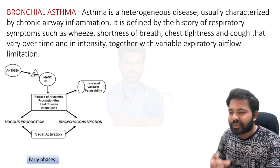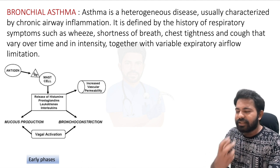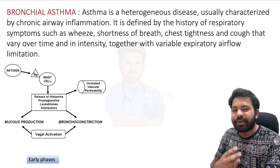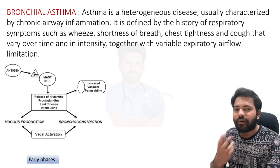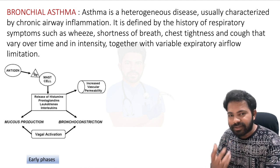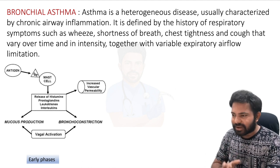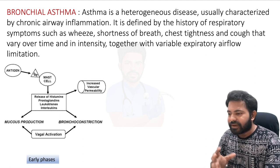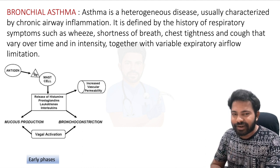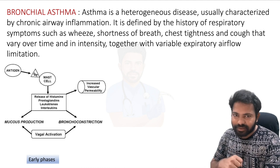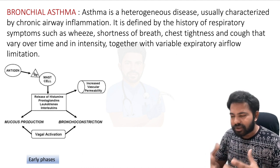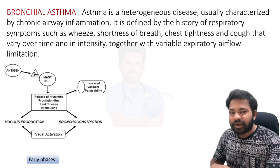Now let us know a brief pathophysiology. The person is susceptible to allergens — it could be dust, latex allergy, or any other foreign antigen. With repeated exposure to the same antigen, a chronic disease develops. The antigen reacts on the mast cell, causing release of histamines, prostaglandins, leukotrienes, interleukins, and other inflammatory mediators, along with increased vascular permeability, which leads to increased mucus production and bronchoconstriction due to vagal activation.